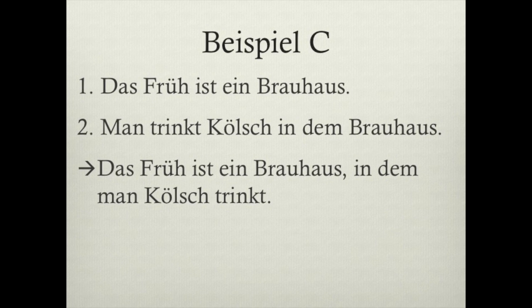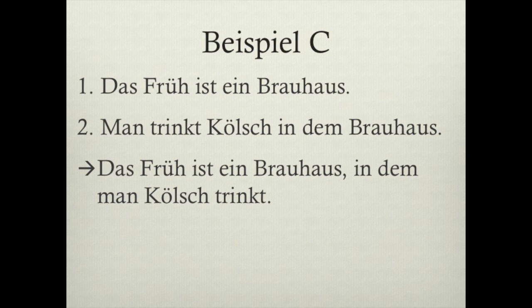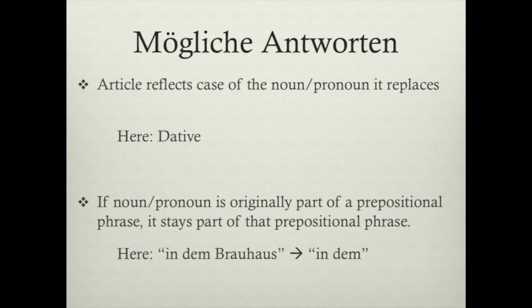Moving on to our third example, Beispiel C. 'Das Früh ist ein Brauhaus.' 'Man trinkt Kölsch in dem Brauhaus.' And the last sentence: 'Das Früh ist ein Brauhaus, in dem man Kölsch trinkt.' What you should note is that the article reflects the case of the noun or pronoun it replaces — here we have the dative case. Also, if the pronoun is part of a prepositional phrase, it stays part of that prepositional phrase: 'in dem Brauhaus.'